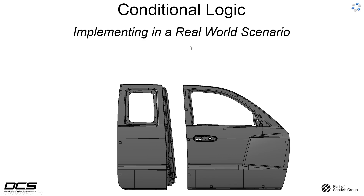Both door assemblies, when brought to the line, are located using a combination of fixture pads here in yellow, and pins that go into holes and slots respectively, shown here with the green and red arrows as the secondary and tertiary controls.